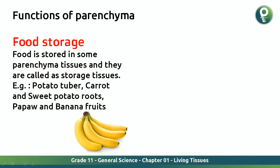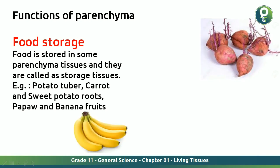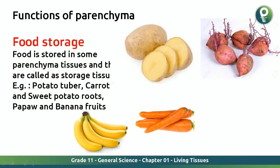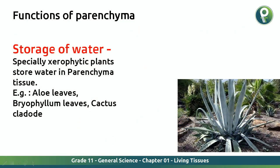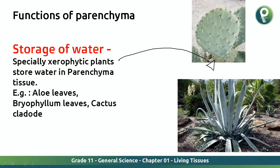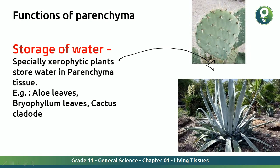Examples of food storage in parenchyma tissues: banana, sweet potato roots, potato tuber, carrot, and pawpaw. What you eat contains parenchyma tissues. The third function is storage of water. Xerophytic plants — a new word — store water in parenchyma tissue. Examples include aloe leaves, bryophyllum leaves, and cactus cladodes. Cactus contains water in it; these are called xerophytic plants.